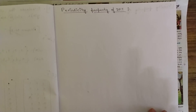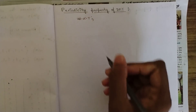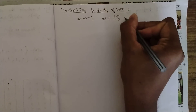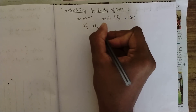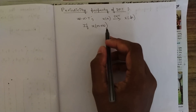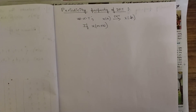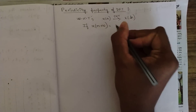For the periodicity property, let us first write what we need to prove. We know that x(n) is a sequence whose DFT is denoted as X(k). The tilde notation represents a periodic function — whenever a signal repeats, that repeated interval is called one period. If x(n + N) = x(n), meaning the sequence is periodic with period N, then what we need to prove is that X(k + N) = X(k).